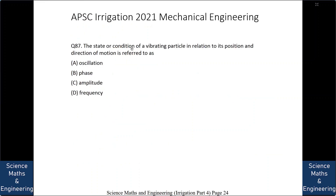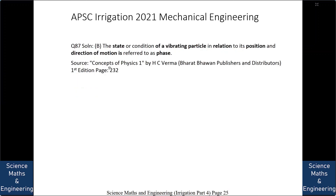The state or condition of a vibrating particle in relation to its position and direction of motion is referred to as: A. oscillation, B. phase, C. amplitude, or D. frequency. The answer is B: phase. This is a basic definition in vibration theory.